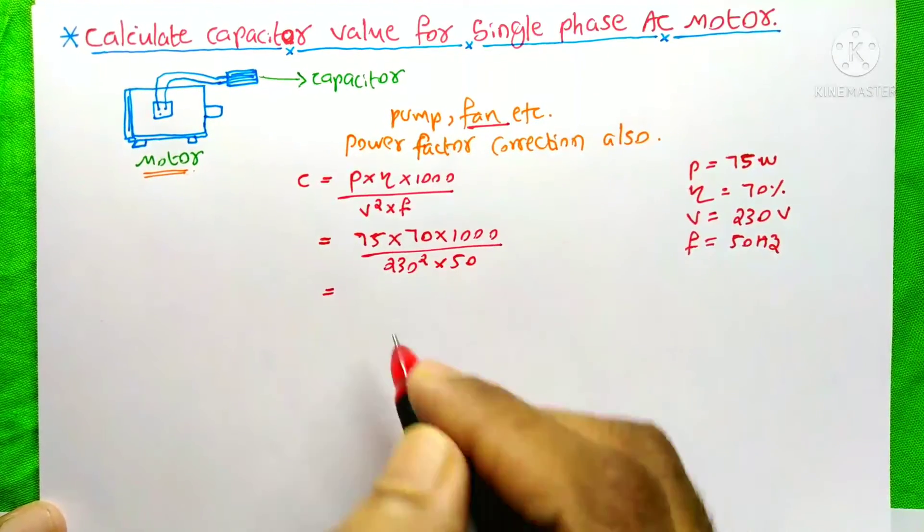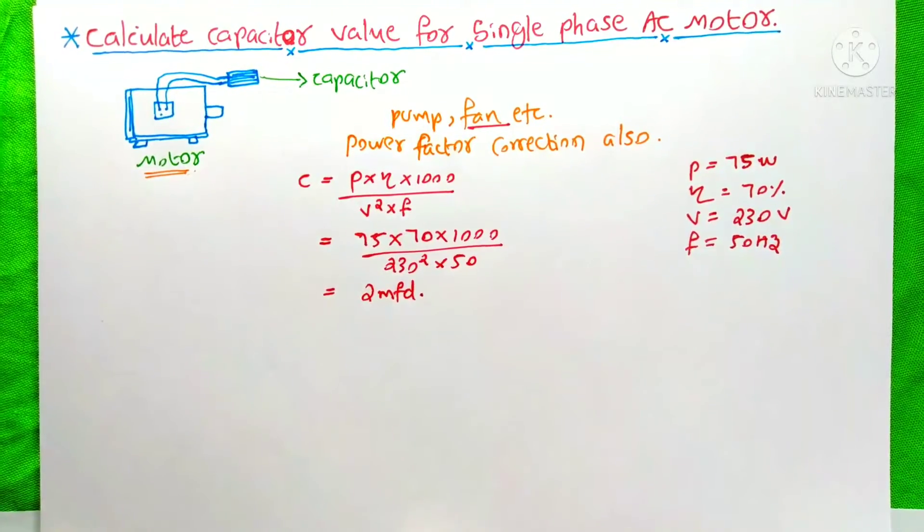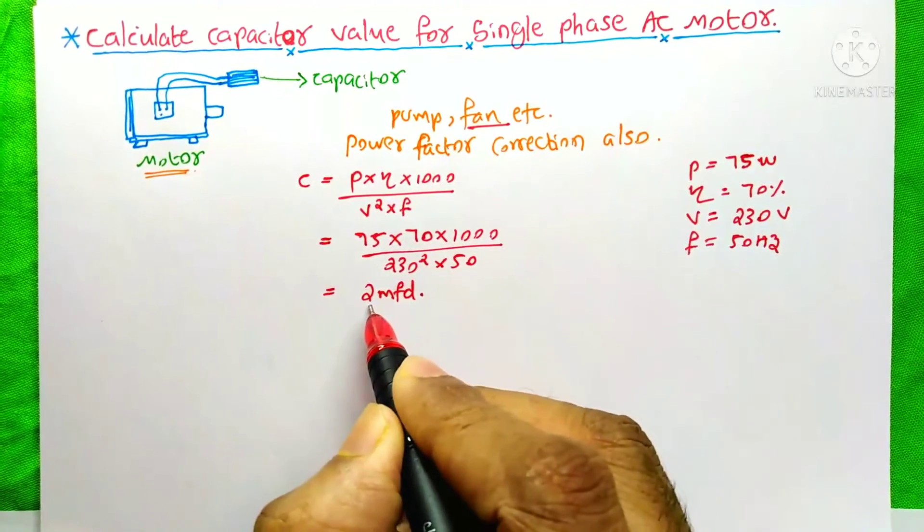When I put all these values in this equation, we get an answer of 2 microfarad. So you need to purchase a capacitor of 2 microfarad from the electrical shop.